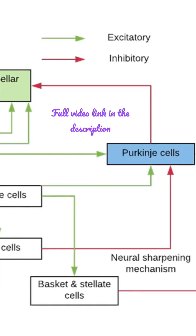All the afferent fibers to the cerebellum — the mossy fibers and the climbing fibers — are excitatory to the cells of the cerebellar cortex, and their collaterals are excitatory to the intracerebellar nuclei.